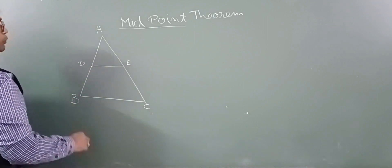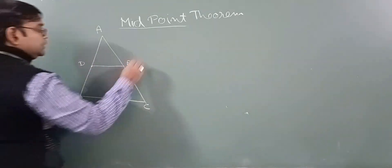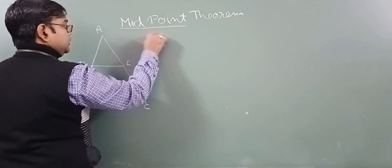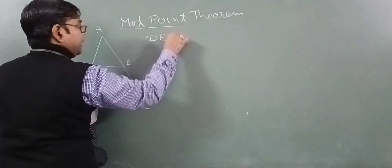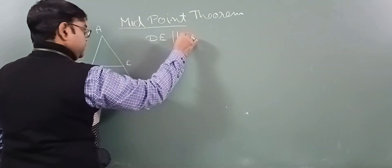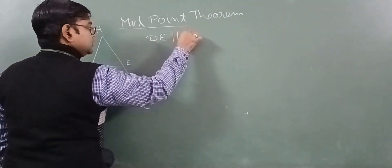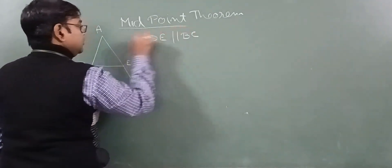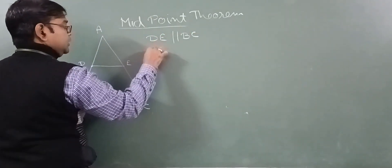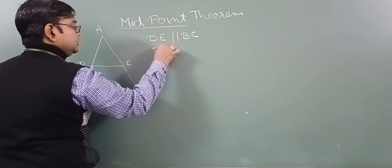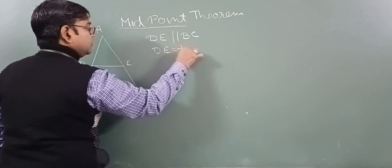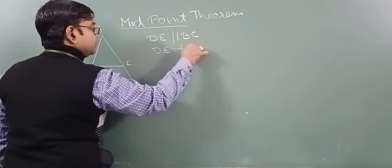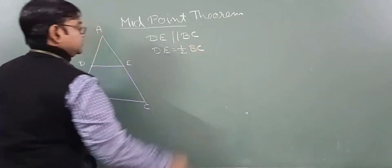We have to prove that DE is parallel to BC and DE equals half of BC. This is what we need to prove.